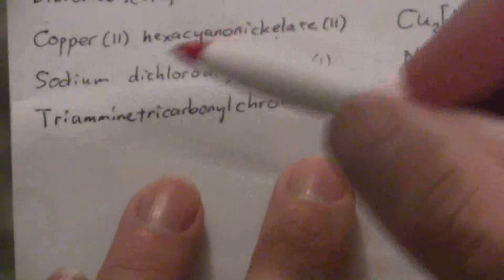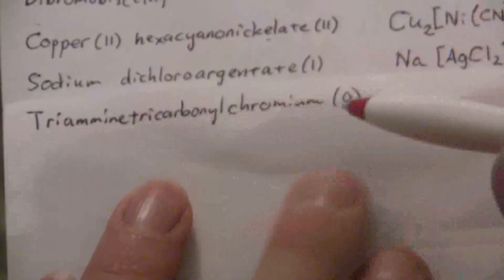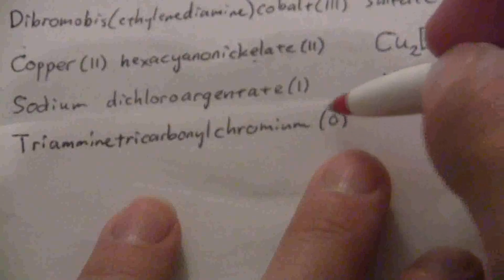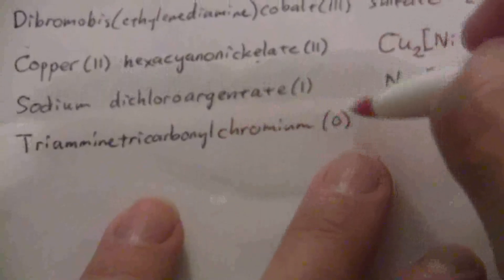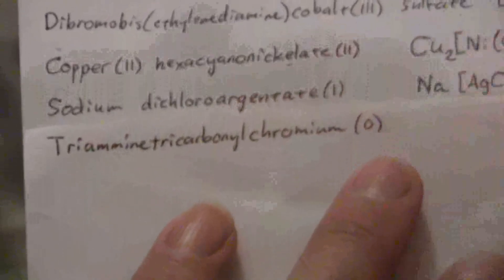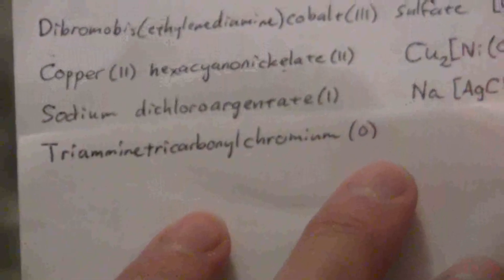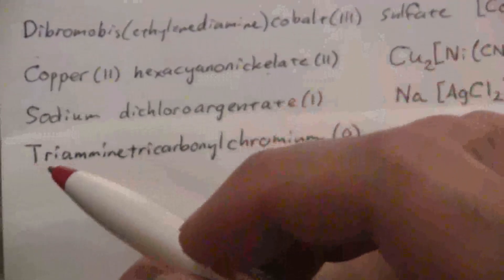All right, and the last one here, triamine tricarbonyl chromium(0). If the transition metal does not have a charge, it can still have some ligands with it, but we just put a zero in parentheses instead of the Roman numeral indicating a charge.